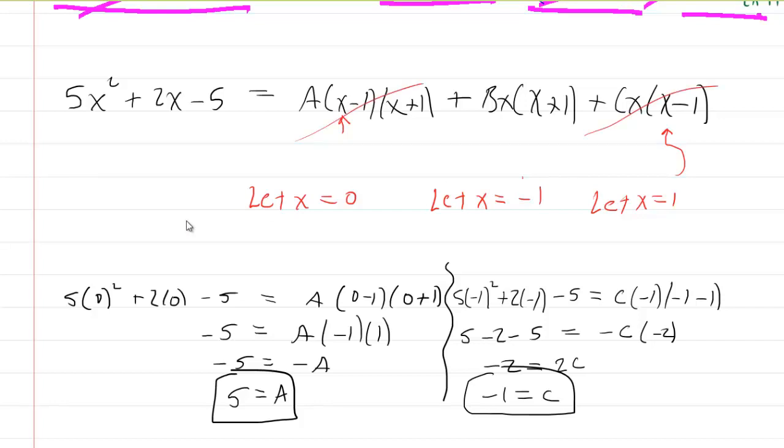So now we'll put 1 in for x. We'll have 5 times 1 squared plus 2 times 1 minus 5 equals B times 1 and then times 1 plus 1. So clean this up a little bit. 5 plus 2 minus 5 equals, this will become 2B over here. So now you have 7 minus 5. You have 2 equals 2B and therefore B is equal to 1. So you have your A, your B, and your C.